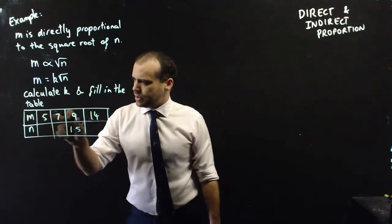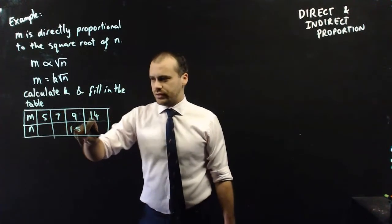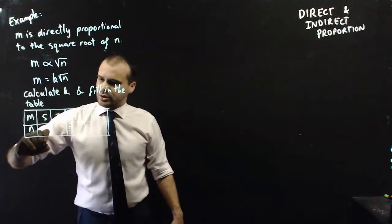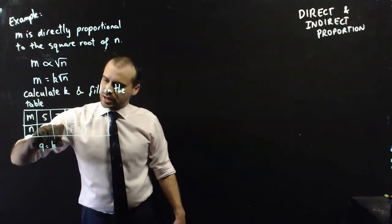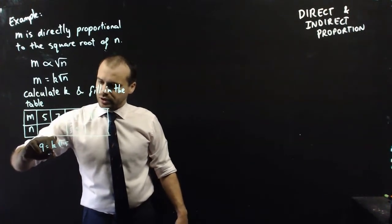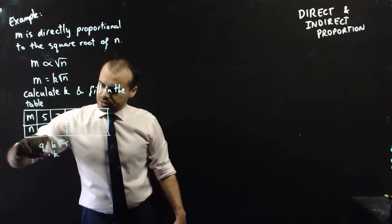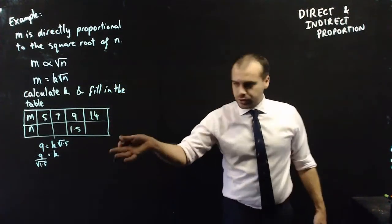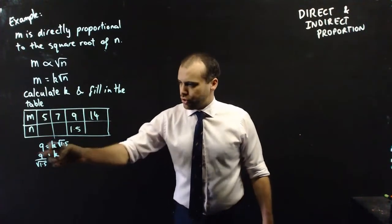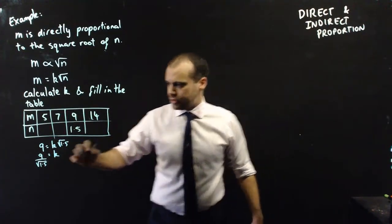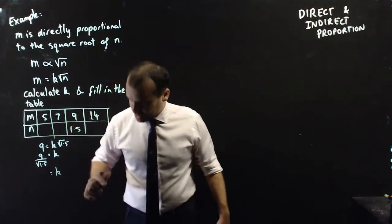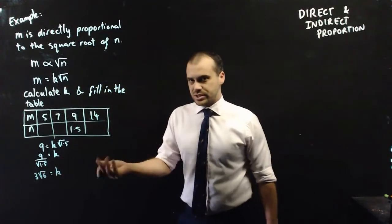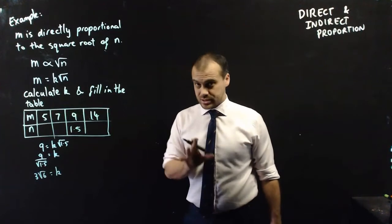All right, so we've got this table. We know that when m equals 9, n equals 1.5. And as long as we have m and n, we can then calculate k. So, if m equals 9, k root 1.5, which means that k is going to be equal to 9 divided by root 1.5. Now, you could leave k in that value. You could type that into your calculator and your calculator would actually simplify it a little bit and tell you that k is equal to 3 root 6. You could also get to 3 root 6 without your calculator, but it does take a little bit of mucking around.